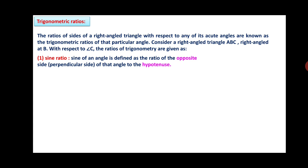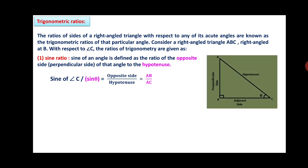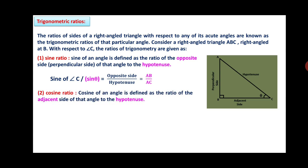Sine of an angle is defined as the ratio of the opposite side (perpendicular side) of that angle to the hypotenuse. Therefore, sine of angle C — also written as sin θ — is equal to the opposite side upon hypotenuse, that is AB upon AC. Cosine of an angle is defined as the ratio of the adjacent side of that angle to the hypotenuse.